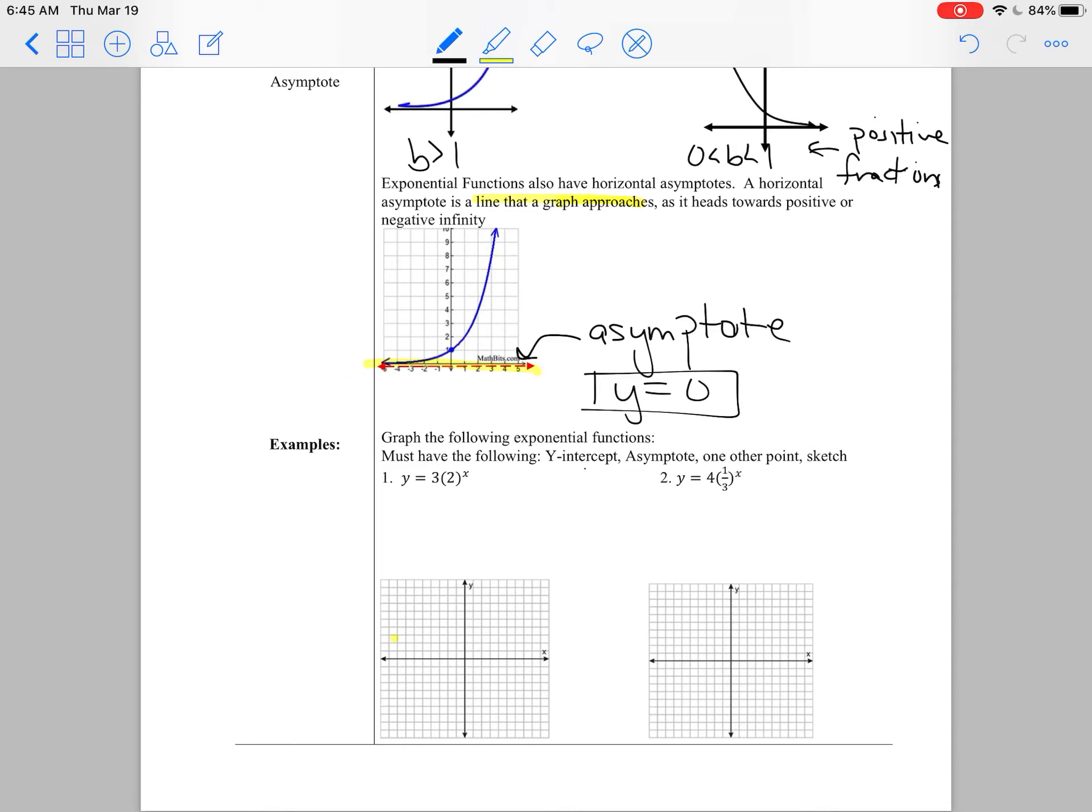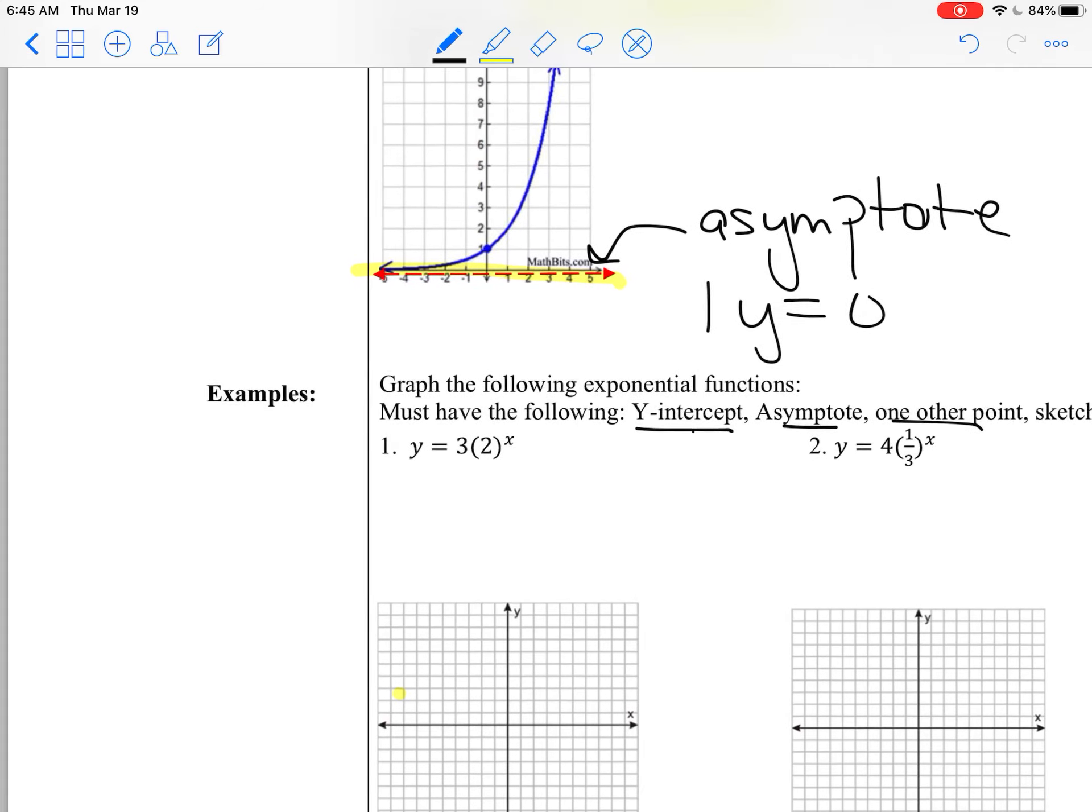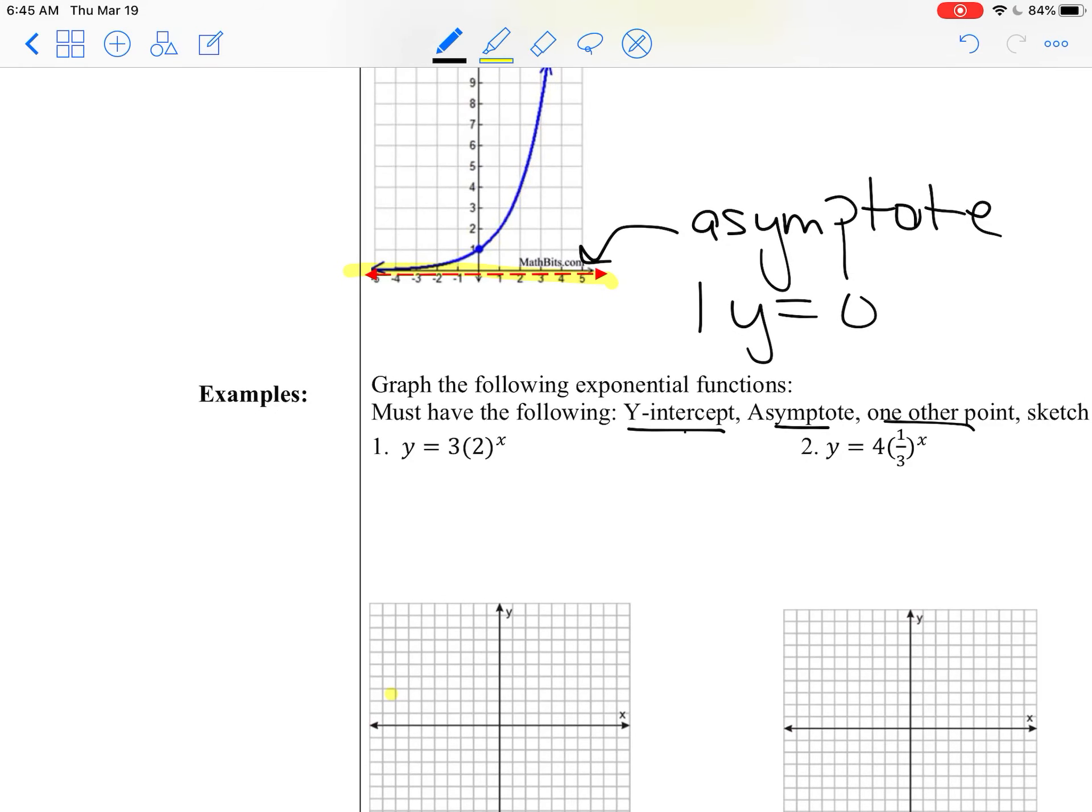All right, so let's graph these ones here. To graph them, I want you to list the y-intercept, the asymptote, and one other point. You've got to show this. So if you remember, in the equation of y equals a b to the x, this is our y-intercept.